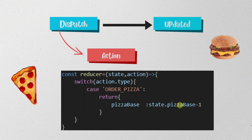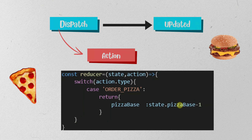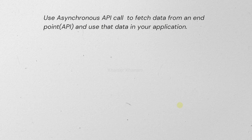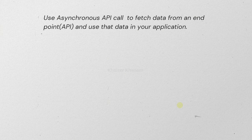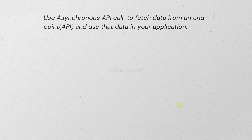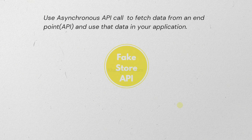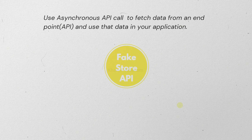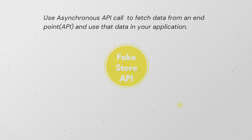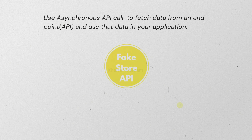Same for burger — if I dispatch 'order burger', the number of burger buns will be reduced by 1. But eventually, as our application grows, we need to use asynchronous code using which we can fetch data from an API and display it in our application. In this course, we are going to use the FakeStore API to fetch product data. Before writing the entire logic, we should first understand the entire flow of this application.